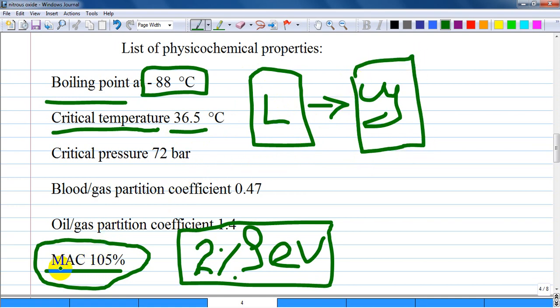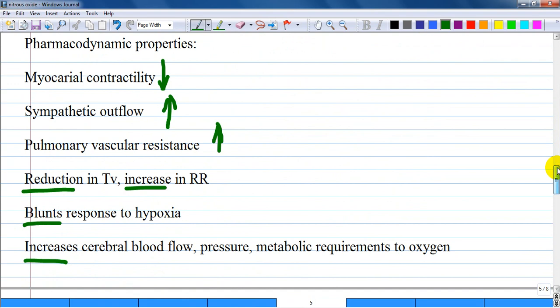MAC is minimal alveolar concentration, and for nitrous oxide it is 105 percent. This very high value means it is a weak anesthetic. MAC is the alveolar concentration at which patients do not respond to surgical procedures like incision. In comparison, sevoflurane has a MAC of 2%, making it more powerful. You have to give a lot of nitrous oxide for induction of anesthesia.